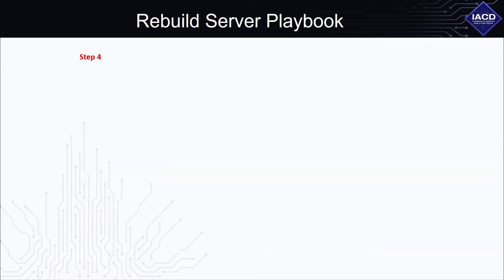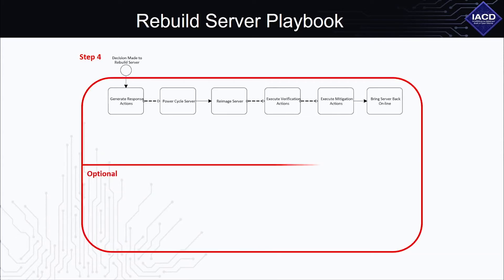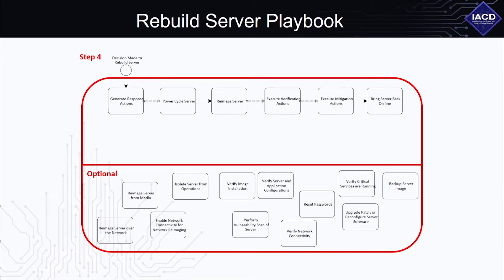Step 4: Build the playbook process step diagram using the required steps identified in Step 3. Ask yourself what order makes the most sense for performing the process steps. Now is the time to think about the order in which you would perform these actions.